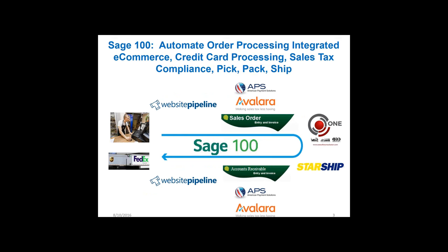Then we'll cover picking and packing through ScanCo and the One Software Solution, how that order moves over to be picked and packed, and how the shipment details are sent to Starship. Starship automatically updates accounts receivable so customers can be billed and invoiced. Then all that information is reflected back into Website Pipeline where customers can view tracking numbers and delivery details through a self-service portal.